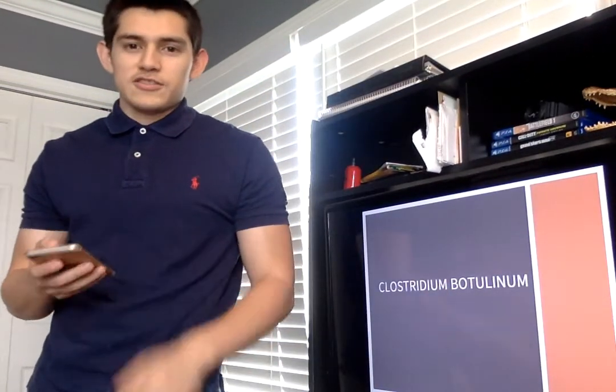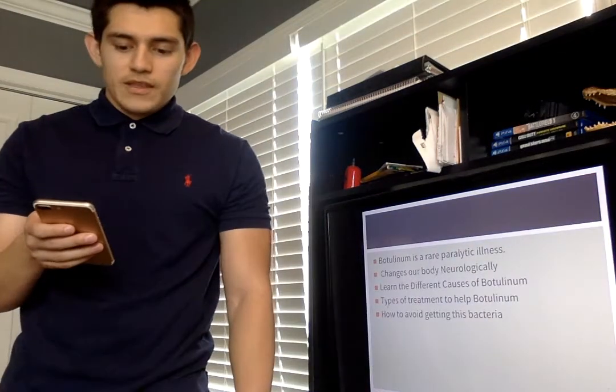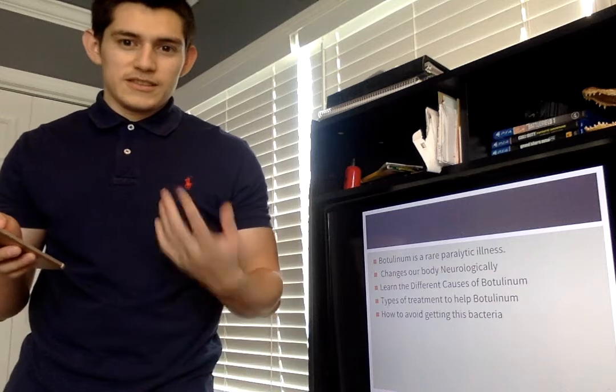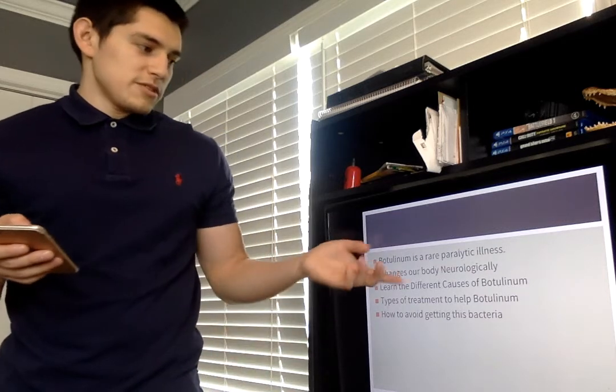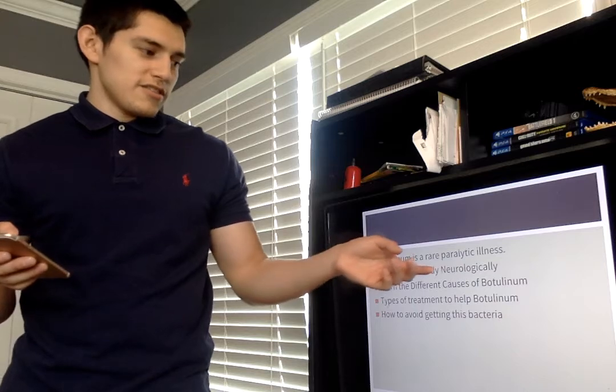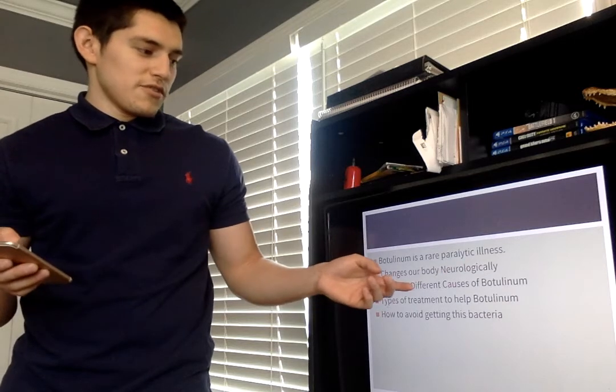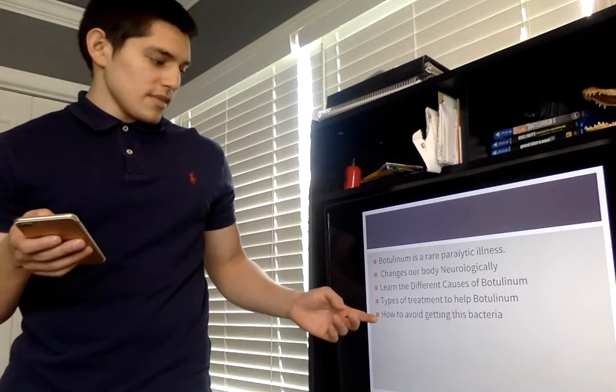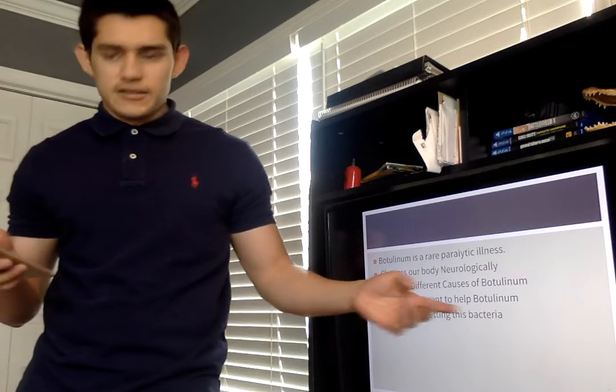Today I chose Clostridium Botulinum. I'm going to show you five different things over this disease. Botulism is a rare paralytic illness. It changes in our body neurologically. Learn the different causes of botulism, types of treatment to help botulism, and how to avoid getting this bacteria.